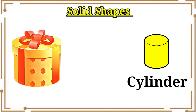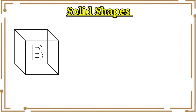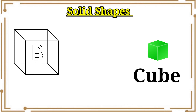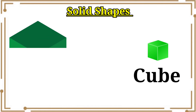Ok kids, let's see the next object. Here, one B block. Which shape is this one? We know that it is in cube shape. So we need to color it in green.